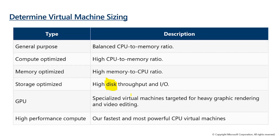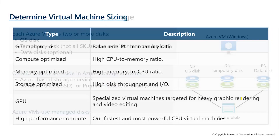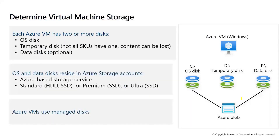GPU (Graphical Processing Unit) VMs are designed for heavy graphic rendering, video editing, and visual editing workloads. High Performance Compute VMs offer the fastest and most powerful CPUs. The cost also varies depending on which type of virtual machine you choose.